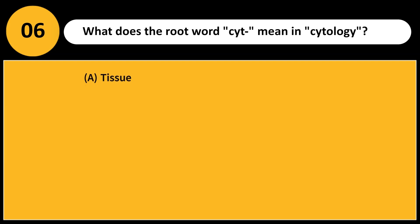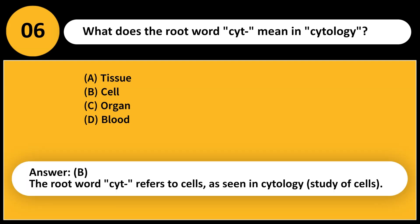What does the root word cyt- mean in cytology? A. Tissue B. Cell C. Organ D. Blood. Answer: B. The root word cyt- refers to cells, as seen in cytology — the study of cells.